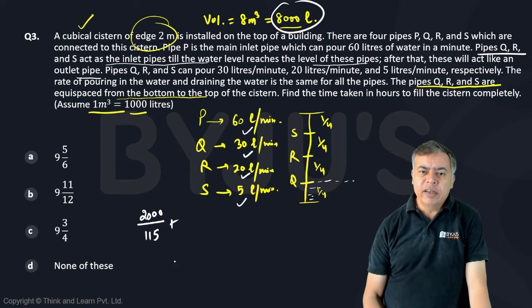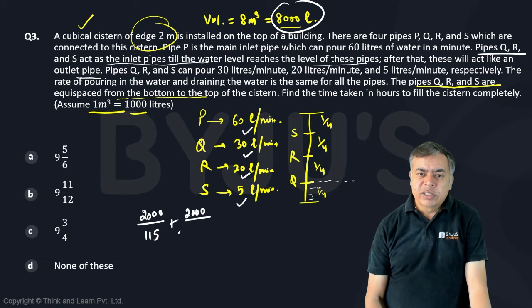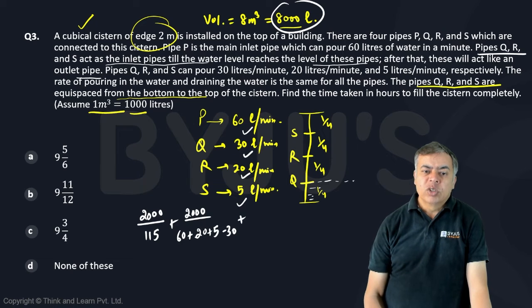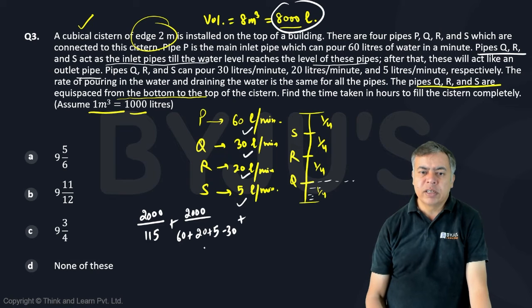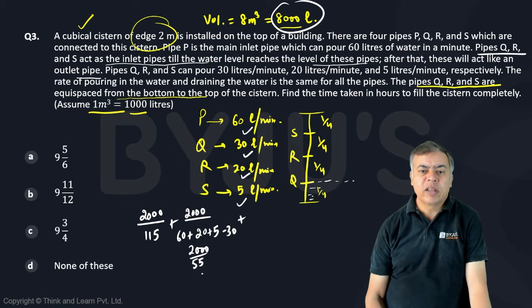Next quarter, 60 is okay. Now 30 will become negative. 20 is okay. 5 is okay. But 30 will be negative. So that means, this will become 2000 by 80, 55. 85 minus 30, 55. So this will become 2000 by 55 minutes.